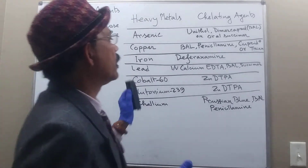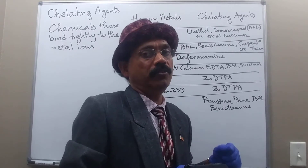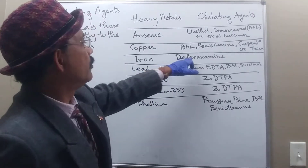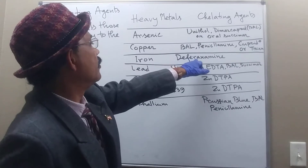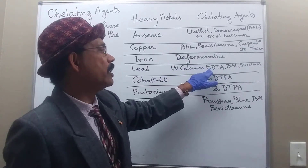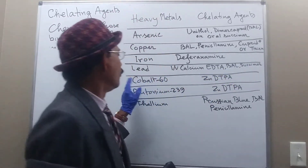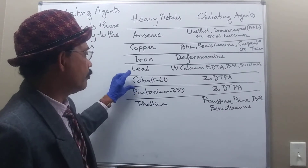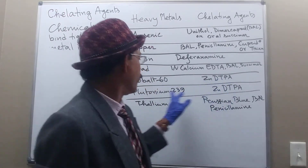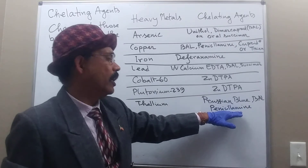For iron, which may be accidentally ingested in excess, deposited due to improper excretion, excessive blood transfusions, or excessive hemolysis, the chelating agent is deferoxamine, given intramuscularly or intravenously. Calcium EDTA — ethylene diamine tetraacetate — or BAL, or succimer can also be used. For cobalt and plutonium, which are associated with radiation, we have zinc DTPA. For thallium, Prussian blue and BAL or penicillamine are used.